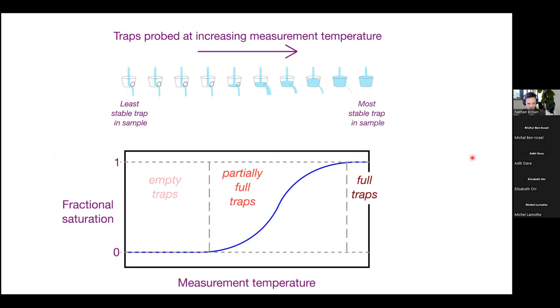So here's kind of what the measurement would look like. As we have this measured, this measurement temperature increasing, you would observe some of the traps which are totally empty, and then these partially full traps going up to entirely full traps. And this is where all of the information about your sample's thermal history resides.